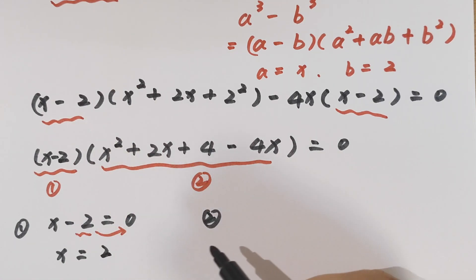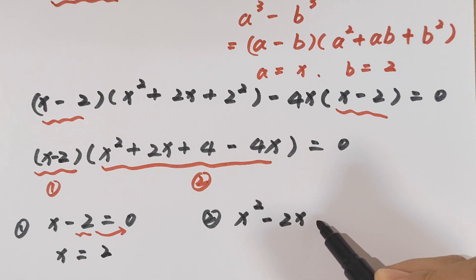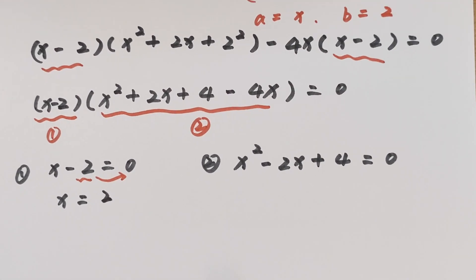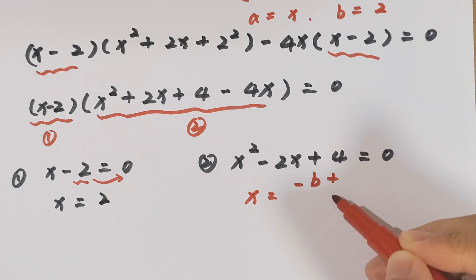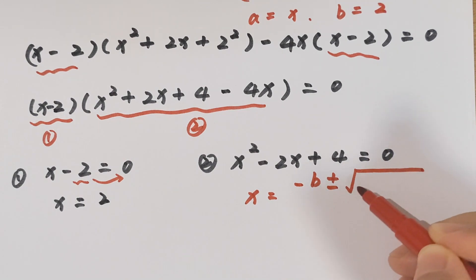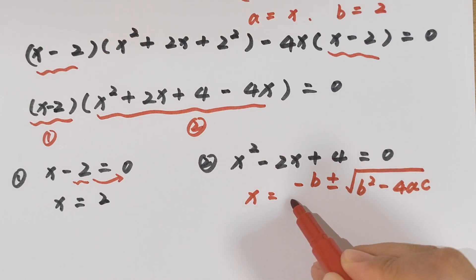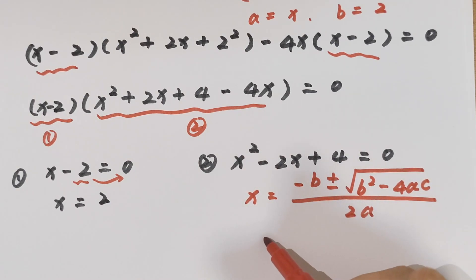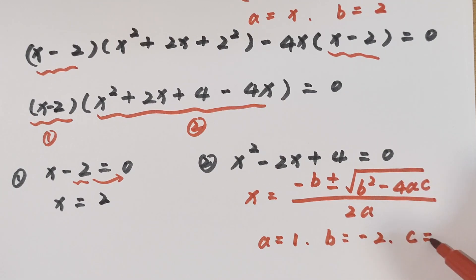The second case is x squared minus 2x plus 4 equals 0. We apply the quadratic formula: x equals negative b plus or minus square root of b squared minus 4ac, divided by 2a. In this equation a equals 1, b equals negative 2, and c equals 4.